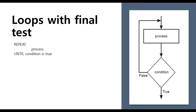Let's go to the next type of loop: the loop with final test. This works basically almost the same as the loop with initial test. The only difference is that we make the evaluation at the end — after we run our process. So we first run our process, then evaluate the condition. If the condition is true we return to the process; if false we exit the loop. The main difference is that the process inside the loop will run at least one time, no matter how the condition evaluates. This is the key difference between loops with initial test and loops with final test.